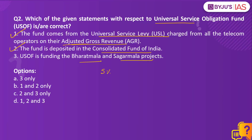Statement 2 is also correct. Coming to Statement 3 — this fund was created for bridging the digital divide. If you know why the Bharat Mala and Sagar Mala projects were launched, you can easily eliminate Statement 3 as incorrect. As a task for today, let us know in the comments what are the objectives of Sagar Mala and Bharat Mala. Since USOF was funding the BharatNet project, the right answer is option B — 1 and 2 only.